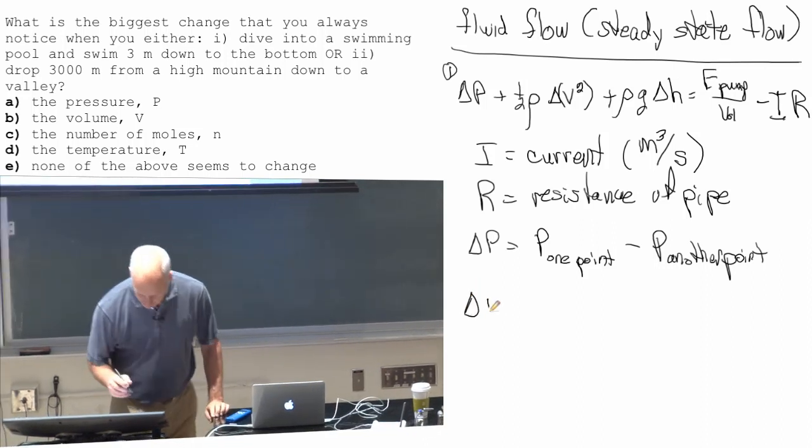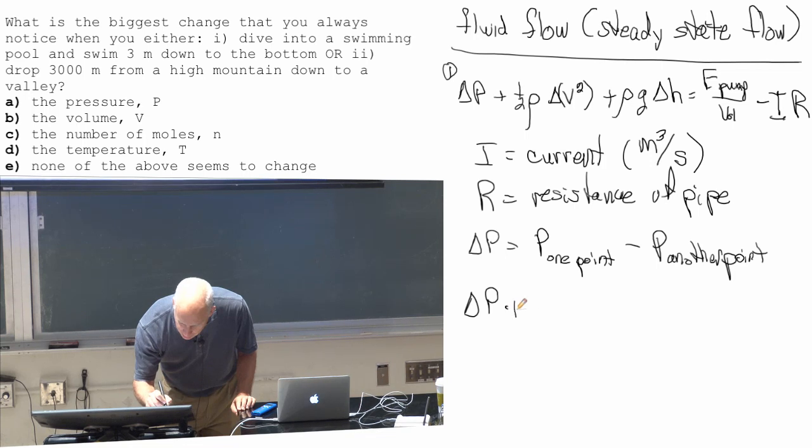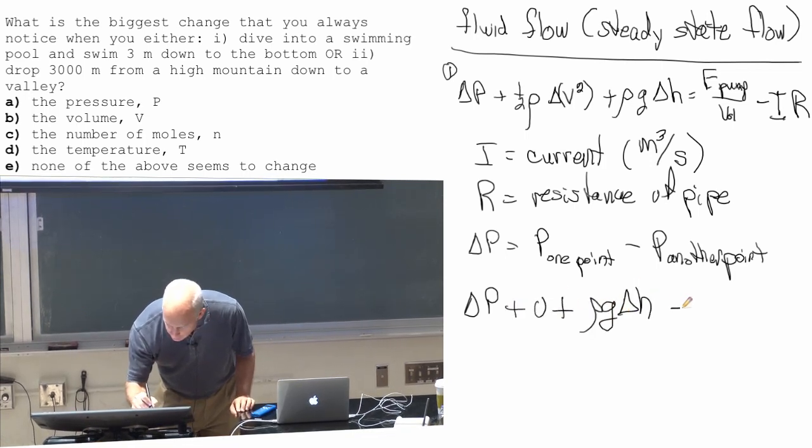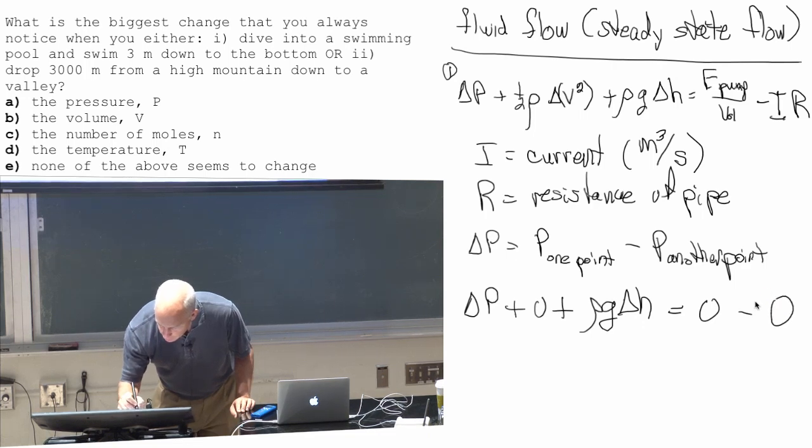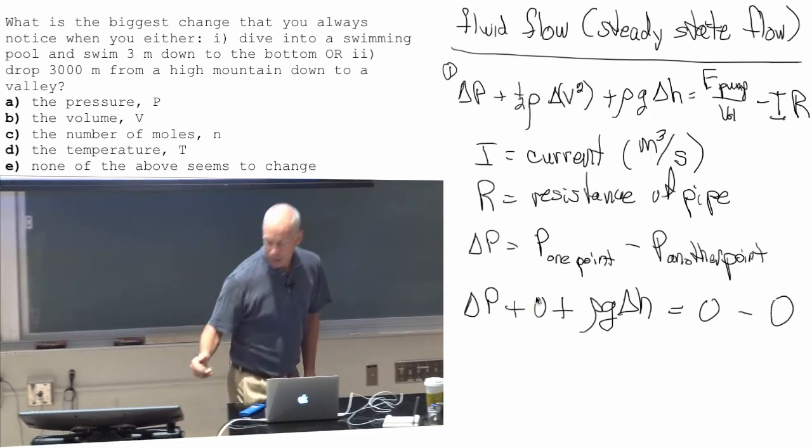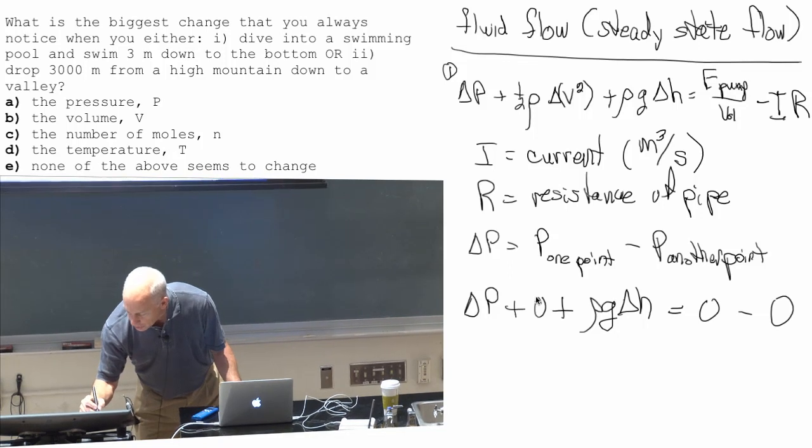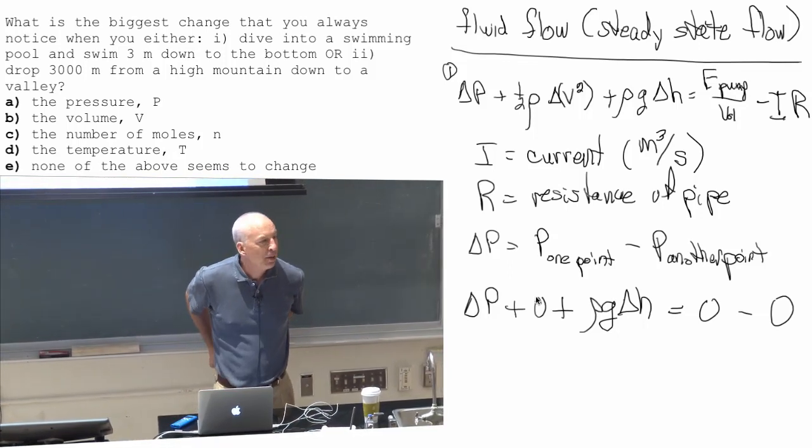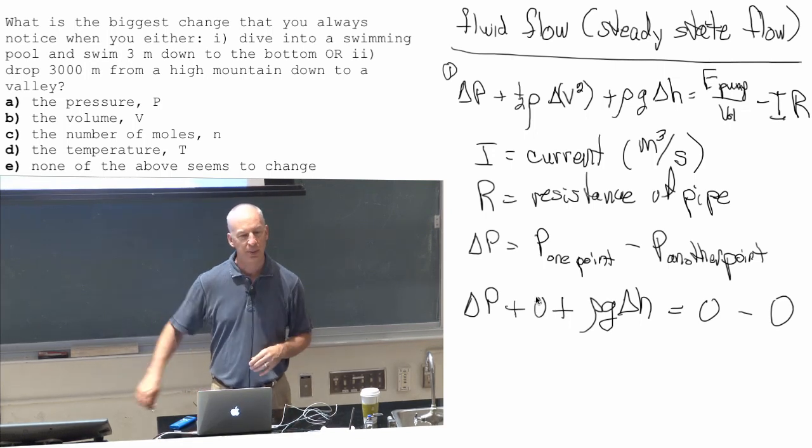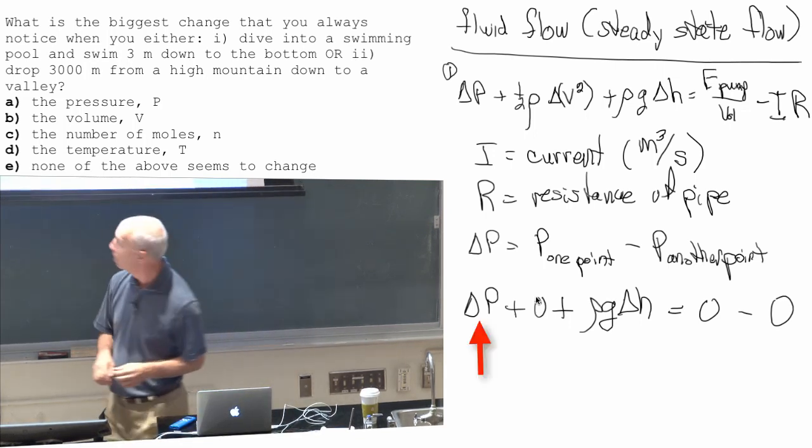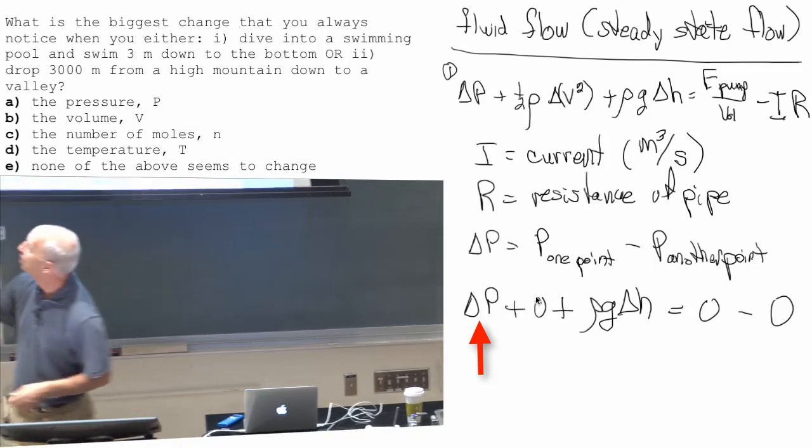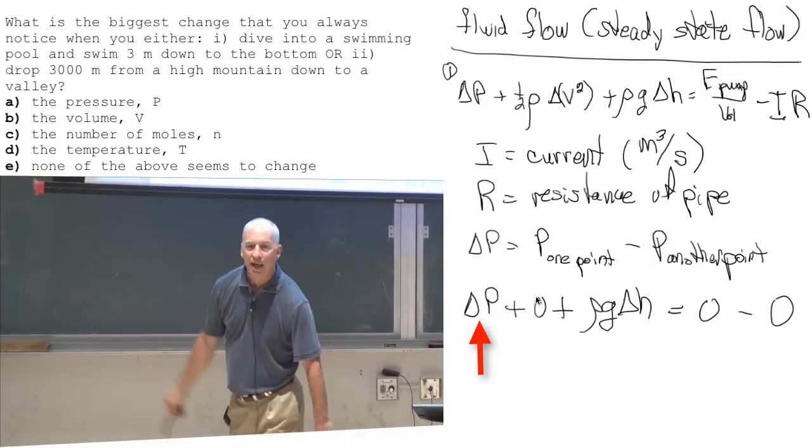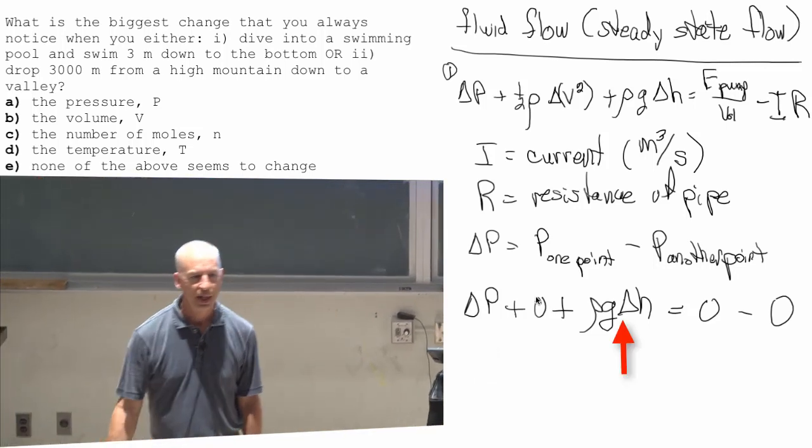So you end up with a bunch of zeros and a pressure change that comes out because there's a change in height, a change in gravitational potential energy. The pressure change is equal and opposite to the change in gravitational potential energy.